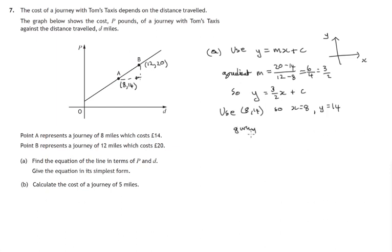So that gives 14 being 3 over 2 times x is 8 plus c. And you notice the only thing we don't know is c, so we can now work out its value. 14 equals 3 over 2 times 8 is 12. Take 12 from both sides. So 2 is equal to the value of c, i.e. c is equal to 2. So the equation is y equals 3 over 2x plus 2.